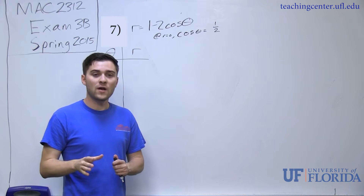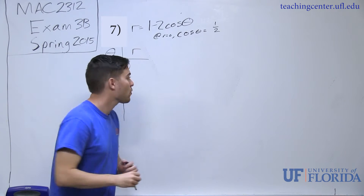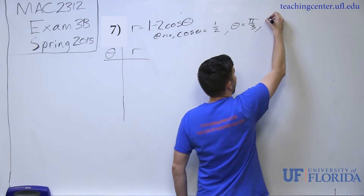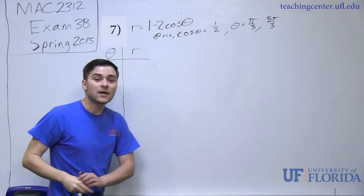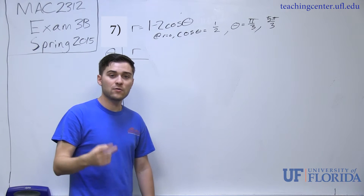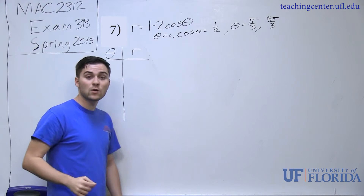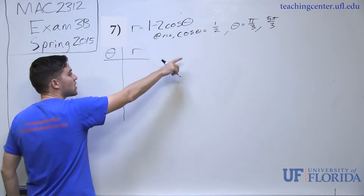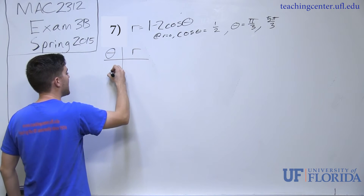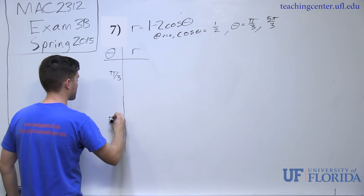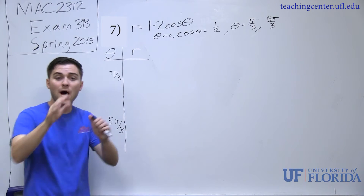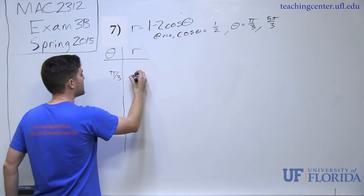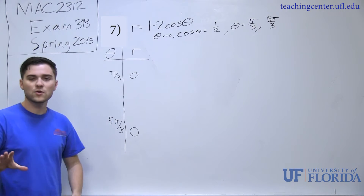Cosine of theta equals positive one half in the first and fourth quadrant. Looking at the unit circle, theta equals pi over three and five pi over three. So there are two theta values that give us cosine of theta equals one half. At both of these points my r value will be zero, so I can plug them into my chart. Those are good starting points.